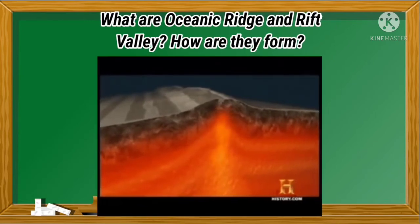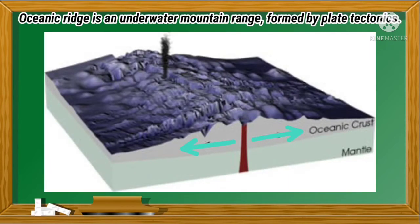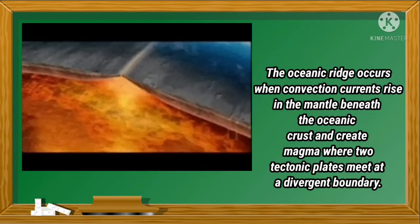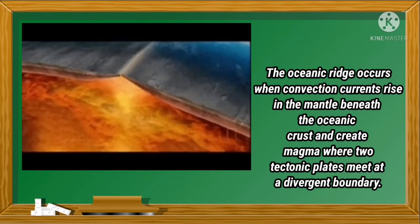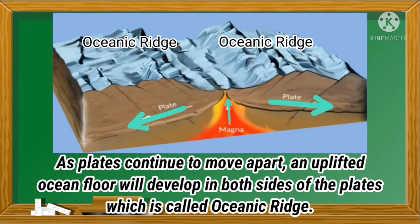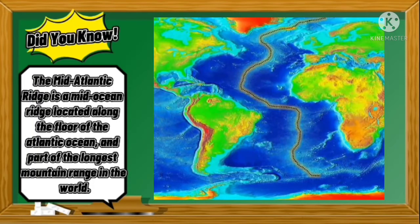What are Oceanic Ridge and Rift Valley, and how are they formed? An Oceanic Ridge is an underwater mountain range formed by plate tectonics. The oceanic ridge occurs when the convection current rises in the mantle beneath the oceanic crust and creates magma, where two tectonic plates meet at a divergent boundary. As plates continue to move apart, an uplifted ocean floor will develop on both sides of the plate, which is called an Oceanic Ridge. Since oceanic crust is thinner than continental crust, a linear-shaped lowland between the Oceanic Ridge will develop, called a Rift Valley. Did you know that the Mid-Atlantic Ridge is a mid-ocean ridge located along the floor of the Atlantic Ocean and part of the longest mountain range in the world?